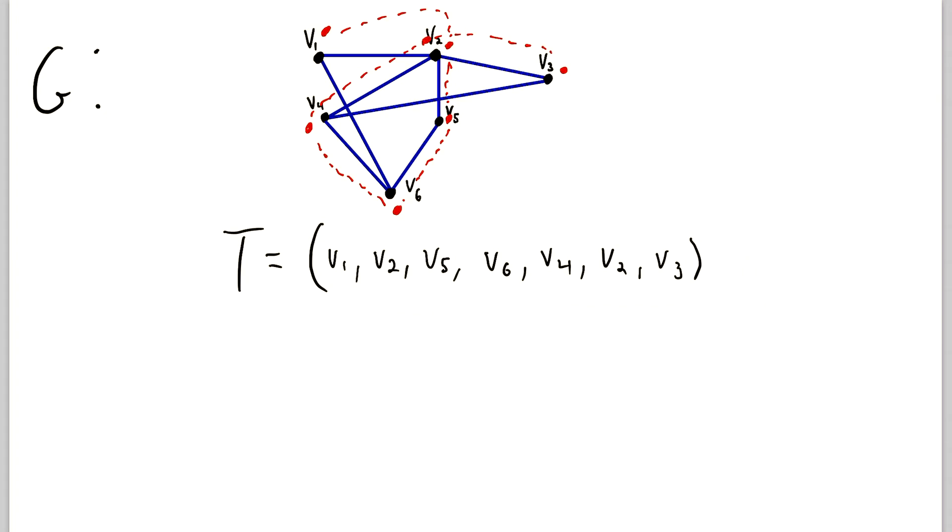Well, just as with a walk, consecutive vertices are adjacent in G. So anytime we're at one vertex, from that vertex, we can only go to adjacent vertices. So consecutive vertices have to be adjacent, but that's the same as with walks.